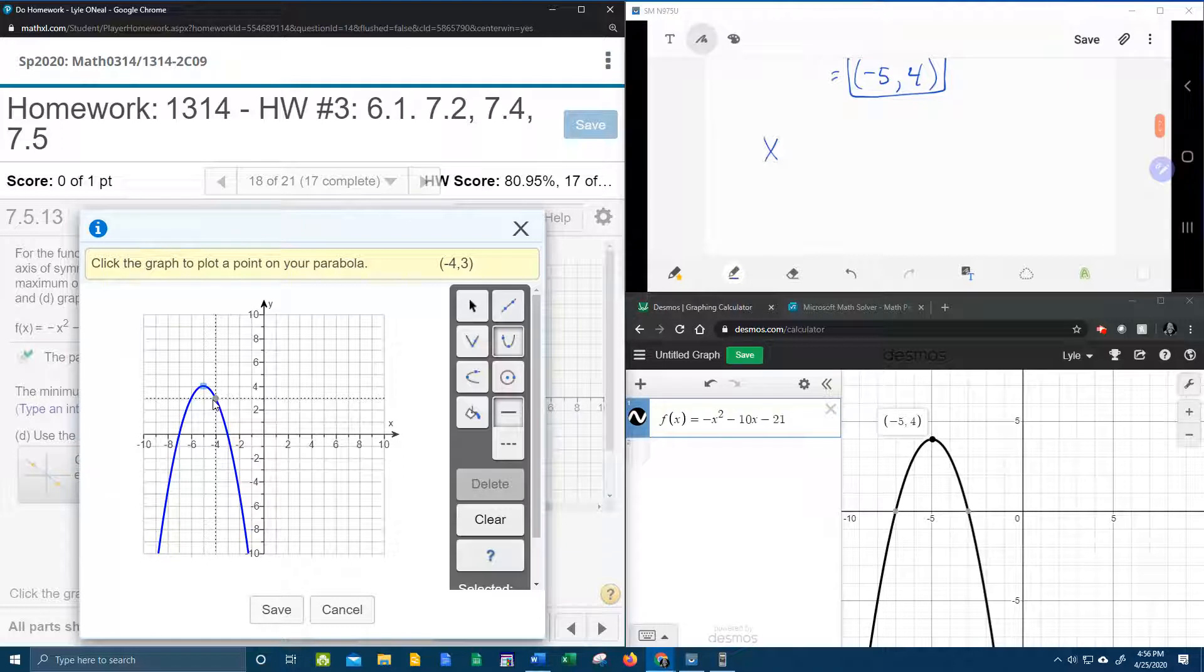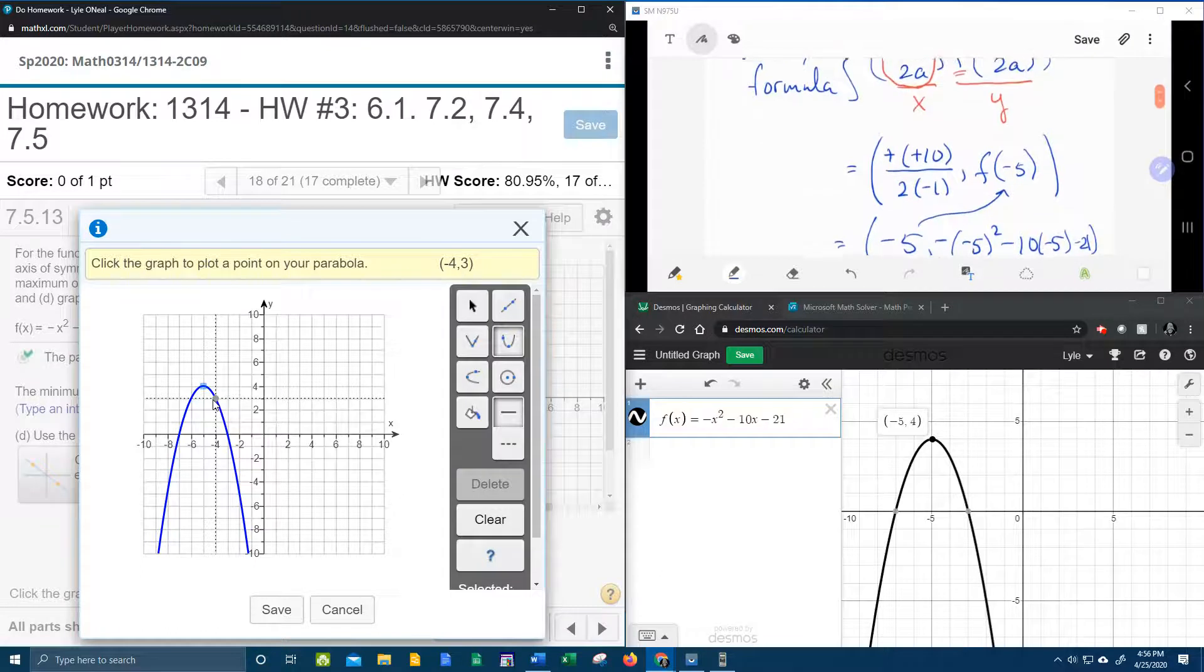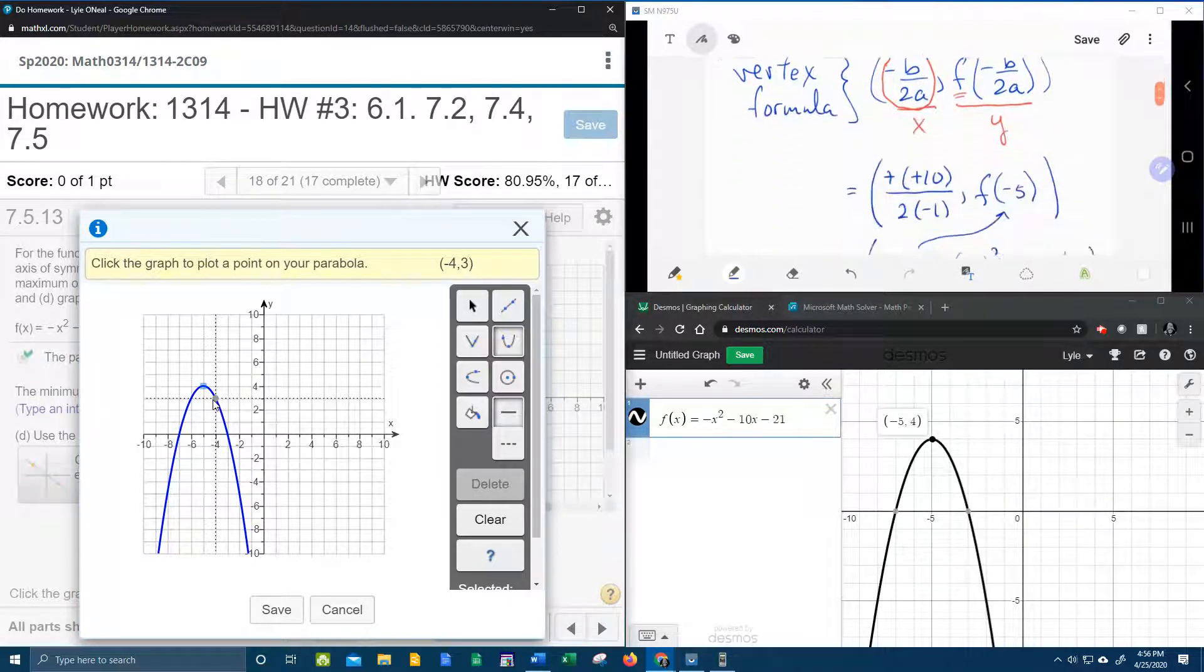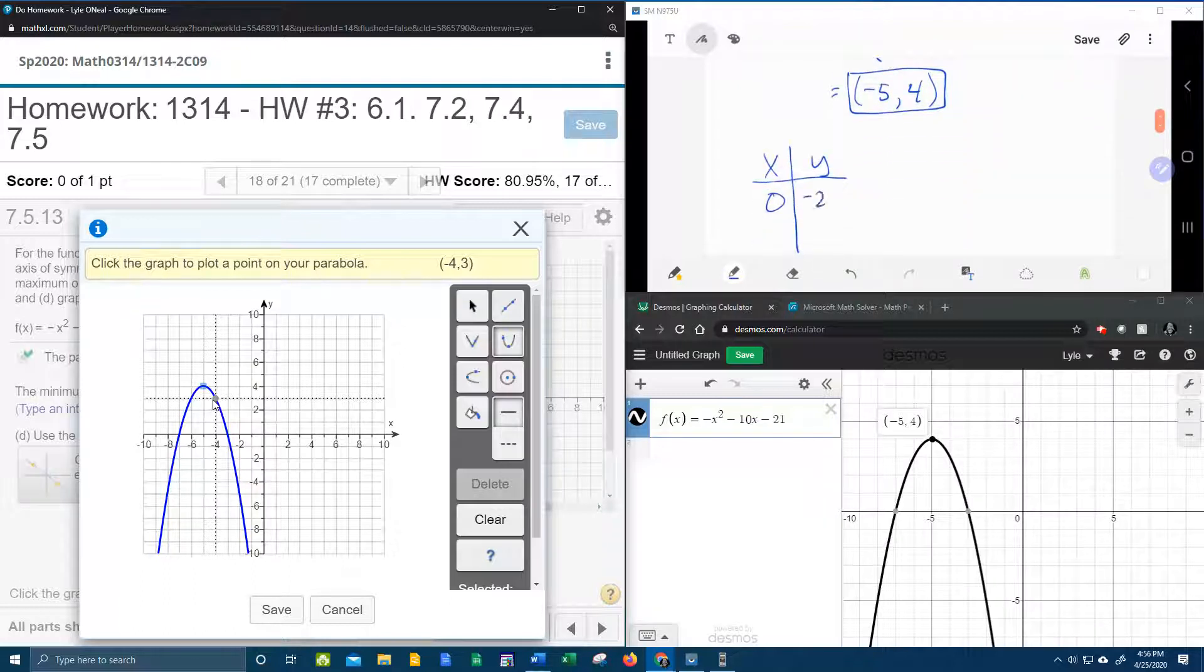What I can do is I can come up here to my function and I can actually calculate another value. So let's make a table real quick. And the easiest value probably to pick would be 0 if it ends up being on our graph. So if x is 0, these cancel and leaves negative 21. And that is actually not on the graph. So we're going to have to pick another number that's actually on this graph.